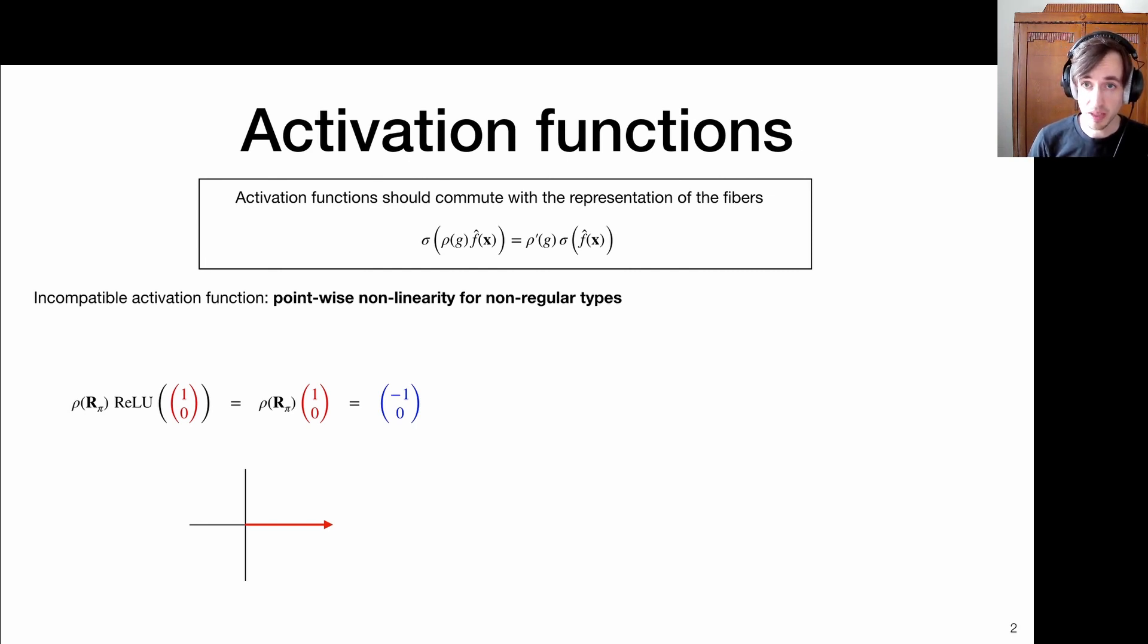So they should commute with the representation of the fibers, because if my input is transformed, then in some way, my fibers are transformed by the representation of the group. And so that means if the fiber is transformed and I apply my activation function, the same kind of information should be there as if I were first to apply this activation function and then transform the fiber via the representation. And maybe for consistency, I should have written an H, because we often said that these fibers transform via the subgroup elements H.